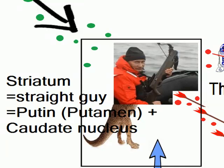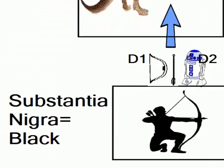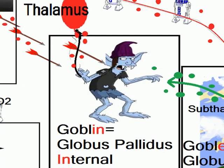Striatum is basically Putin with a long tail, signifying that striatum consists of putamen plus caudate nucleus. Here we have a black figure — substantia nigra means black — and he deals in weapons. Weapon number one is D1, which is a bow and arrow, and the other weapon is D2, which is the robot from Star Wars.